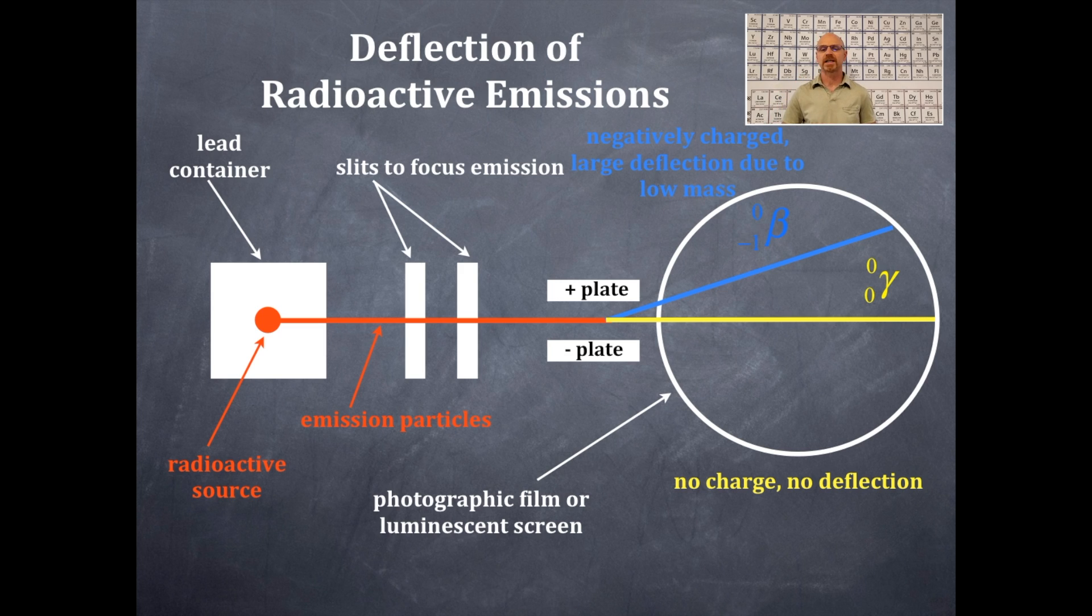And then the third one is an alpha particle. Alpha particles are heavier than beta particles. Therefore, you see that the deflection is less than that of the beta particle. You also should see that the alpha particle is positively charged. So it's going to be going towards the negative side of that magnet and away from the positive side of the magnet.